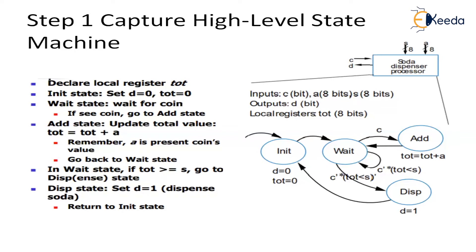Initially everything is 0. From the initial state I move to the wait state, where I wait for a coin. If I detect a coin, I go to the next state called the add state, where I update the total value — the previous total is added with the new value of the cash deposited. That data is added and stored in the total register, and then I go back to the wait state.